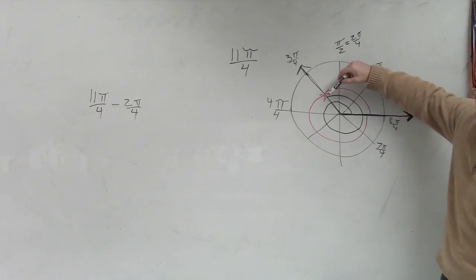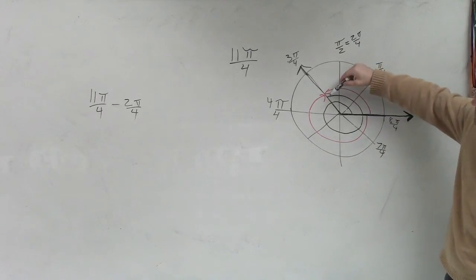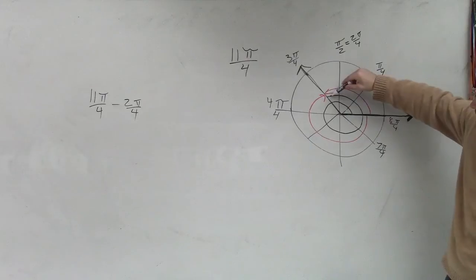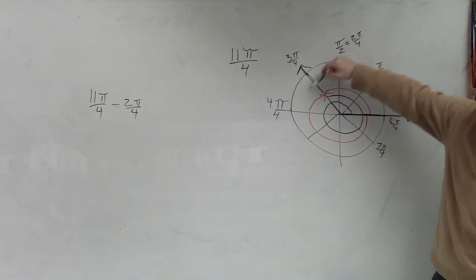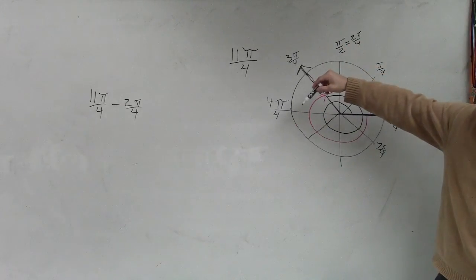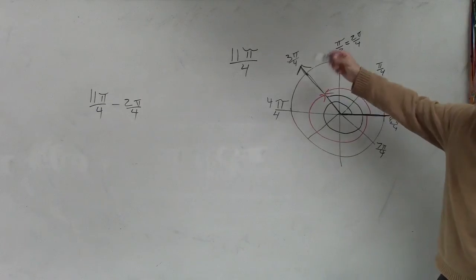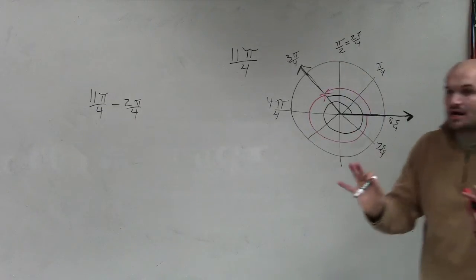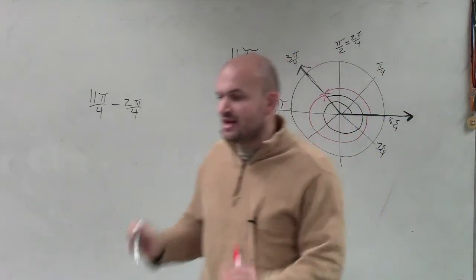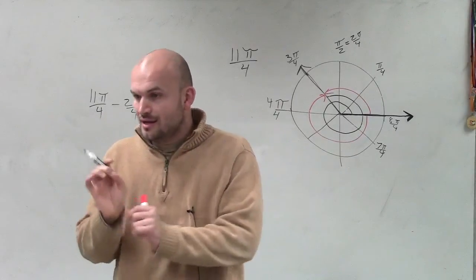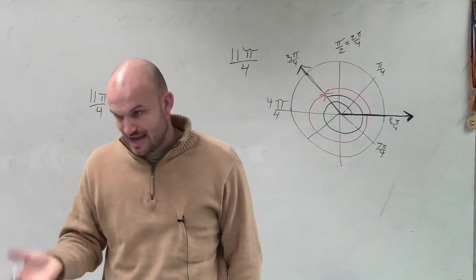But the problem is, if I add 2 pi to here, so here's my angle 11 pi over 4, if I add 2 pi, I'm adding another revolution onto that angle. I don't want to do that. It is still a coterminal angle, but when we're asking for coterminal angles, we're asking for the smallest positive and the smallest negative.